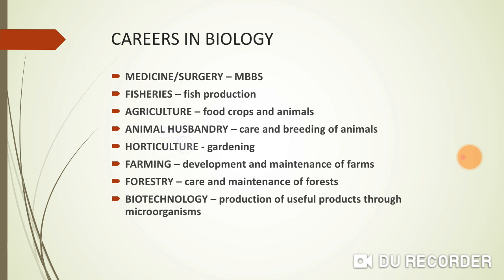Horticulture is related to gardens. Gardens are of two kinds: ornamental plants grown for beauty, and fruit gardening. Both ornamental plants and fruit gardens come under horticulture. Then there is farming — developing and maintaining various kinds of farms, whether poultry farms, dairy farms, honey bee farming, or sericulture (silk farming).